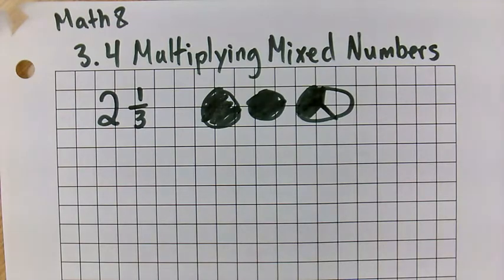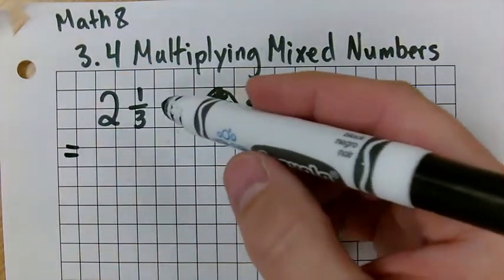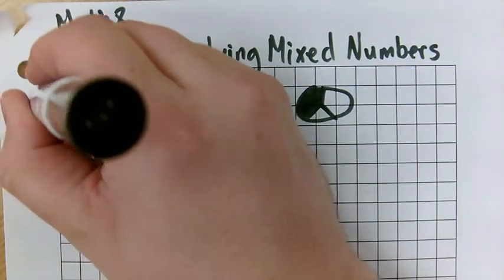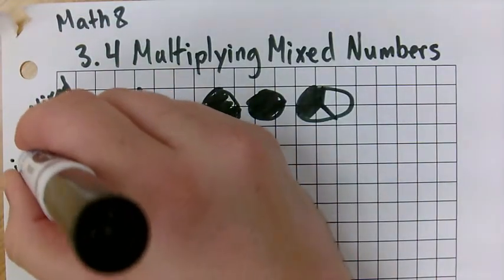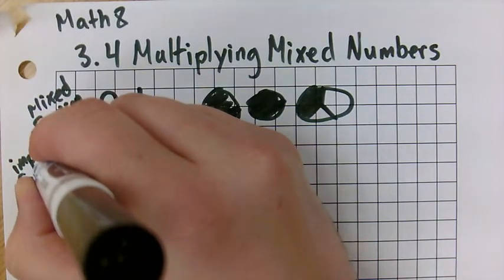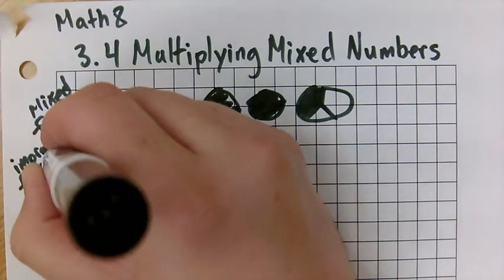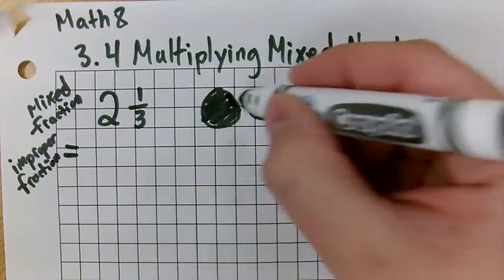Now, in order to be able to multiply mixed numbers, one strategy is to make it into what's called an improper fraction. This is what's called a mixed fraction. Now, we need to make it into an improper fraction. It's actually proper to do it sometimes. Sorry, that's a terrible joke. And how you do that? Simply, you take this and you look at our model here.